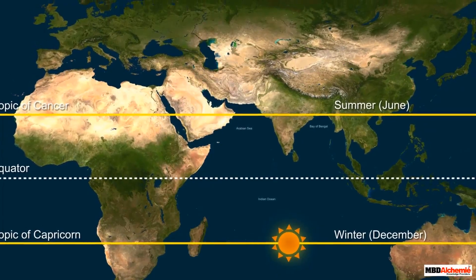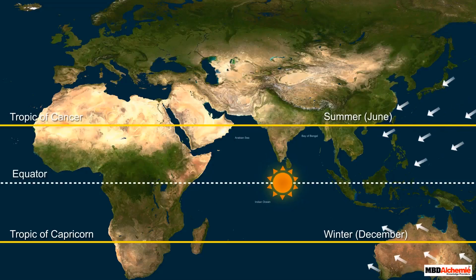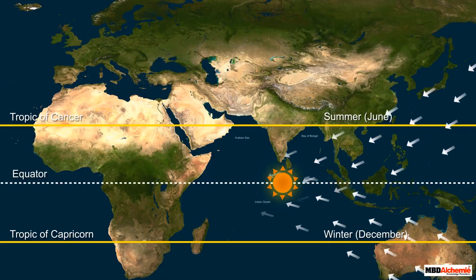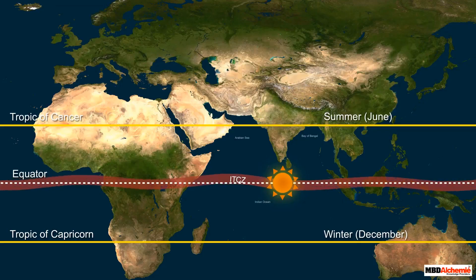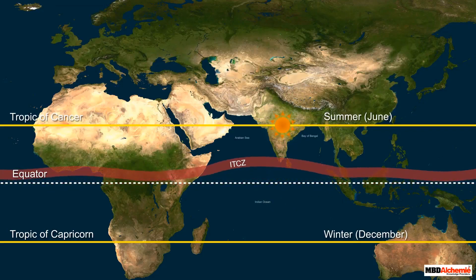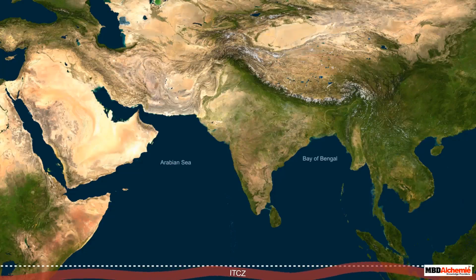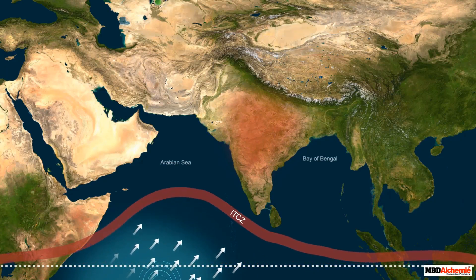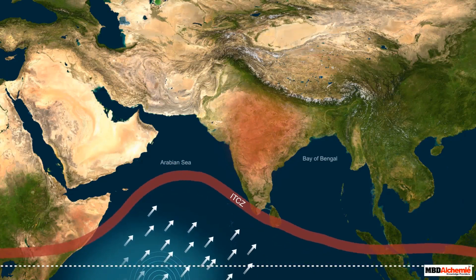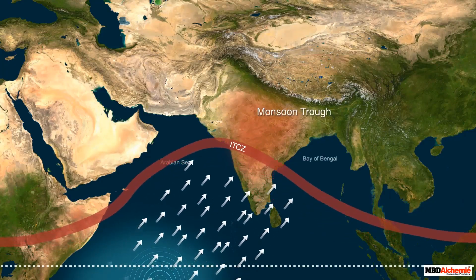The maximum effect can be noticed on the equatorial belt, where the northeast and southeast trade winds converge — this is also called the Intertropical Convergence Zone, or ITCZ. Due to the apparent movement of the sun, this ITCZ shifts 5 degrees north during summer and 5 degrees south during winter. The ITCZ is pushed further north till the Ganga Basin due to the differential heating of the Indian landmass during monsoon season — we call this the monsoon trough.